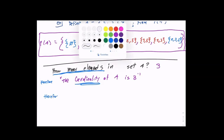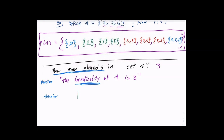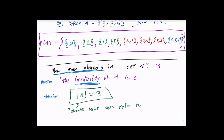The notation looks like absolute value bars but it represents cardinality — the number of elements. So the cardinality of A, written with those bars, is three. These absolute value-style signs refer to the cardinality, i.e., the number of elements.